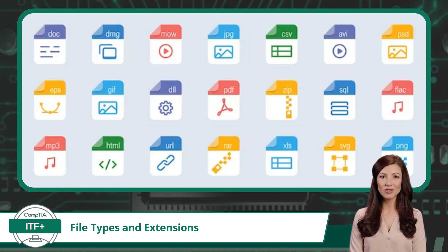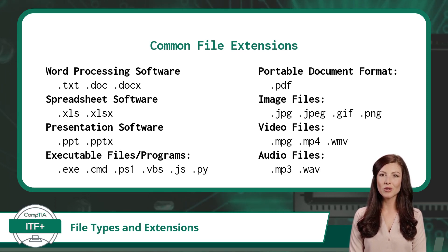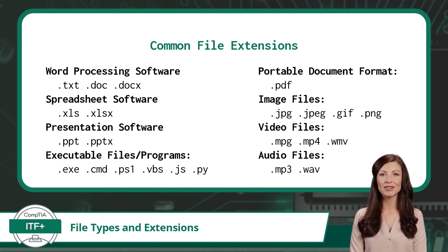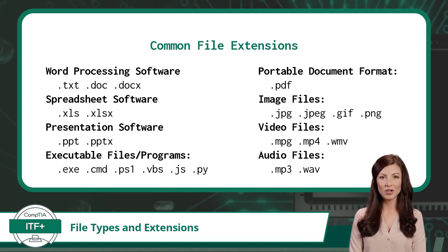Let's dive in and unravel the secrets behind file extensions. File extensions are little tags that convey specific information about a file. For instance, a document might have the .doc extension, while an image could have a JPEG or PNG extension. When you double-click on a file, your computer uses the extension to determine which program should be used to open and read the file's contents. It's like telling your computer, this file is a document, so use the word processing software to open it. Extensions make file handling easier for both users and computers, ensuring that the correct software is used to access each file's data.